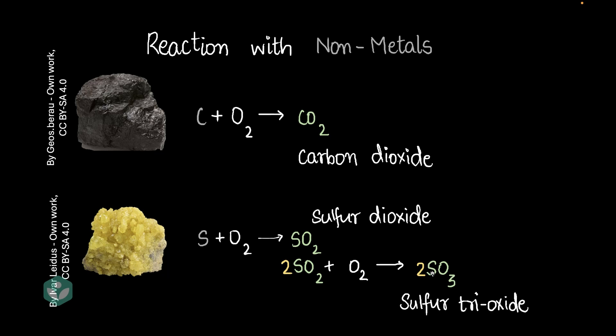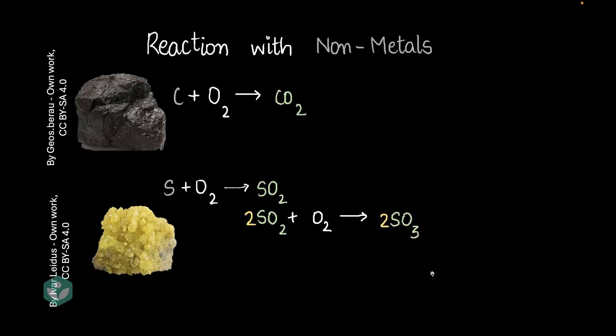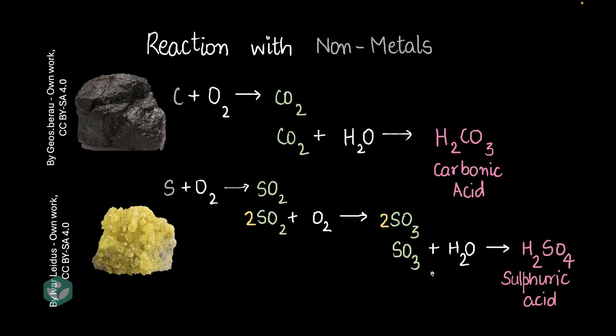Okay, now as we proceed, let me ask you this question. What would happen if we added water to these non-metallic oxides? Like, for example, with CO2, what if I added water? What happens? Well, we get an acid and this acid is called carbonic acid. Okay, what if I did the same thing with SO3? I would get another acid. This one is called sulfuric acid. I'm sure you've heard about this, H2SO4.